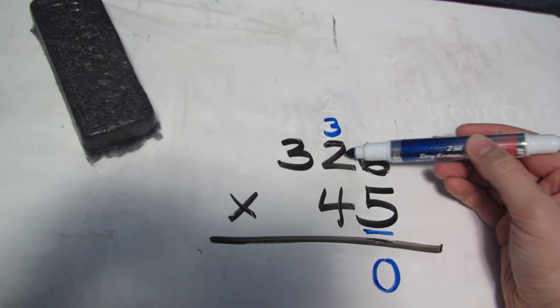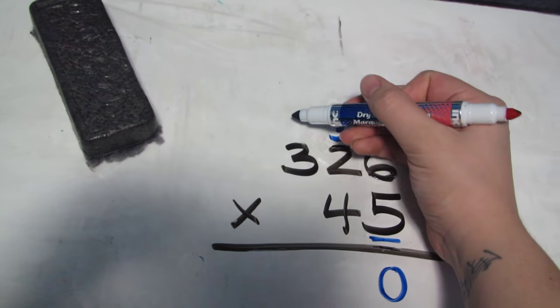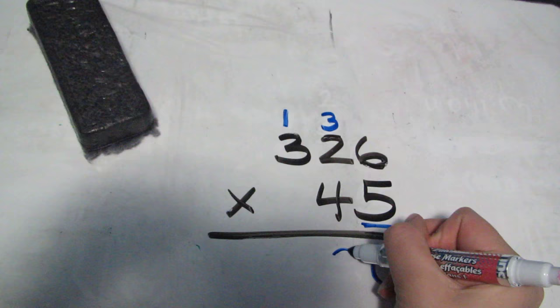Then we have 2 times 5, which is 10, plus 3 is 13, 1, 3.